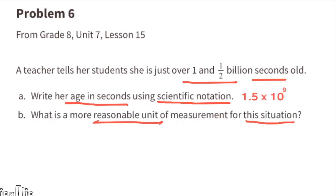B: What is a more reasonable unit of measurement for this situation? Usually when a person tells somebody about their age, they use years. So the most reasonable unit of measurement for this situation is years.